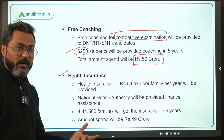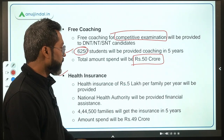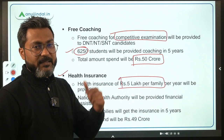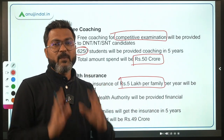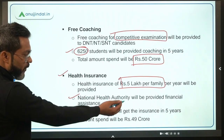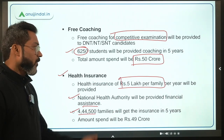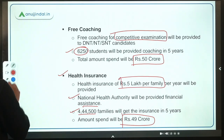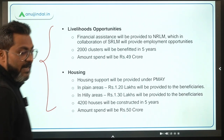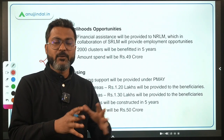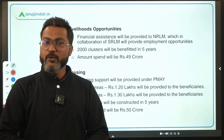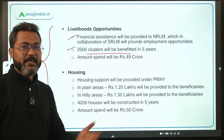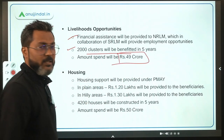Component two is health insurance, provided under Ayushman Bharat Yojana (Pradhan Mantri Jan Arogya Yojana), giving Rs. 5 lakh per family. Financial assistance will be provided to the National Health Authority, which is the implementing agency. A total of 4,44,500 families will benefit, with Rs. 49 crores spent on this component. Component three is livelihood opportunities: financial assistance will be provided to National Rural Livelihood Mission, in collaboration with State Rural Livelihood Missions. 2,000 clusters will benefit over 5 years, with Rs. 49 crores spent.